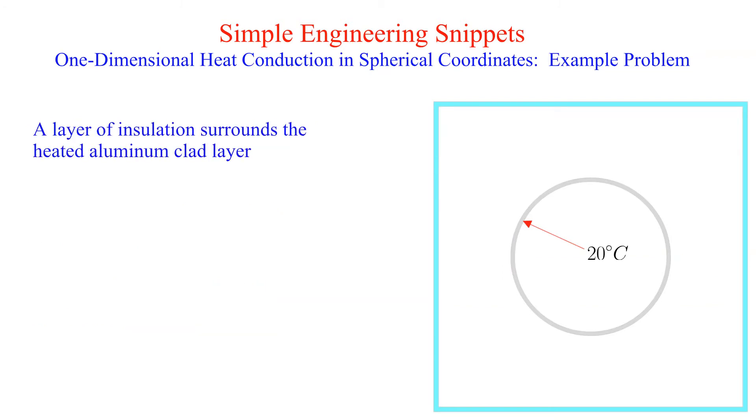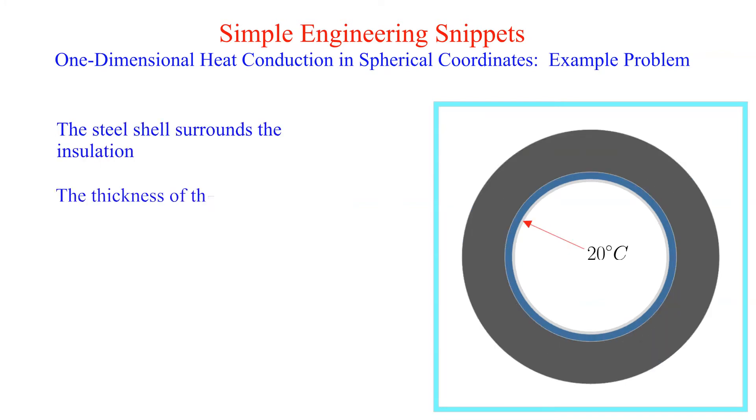The next layer is insulation with a thickness of 1 centimeter. The outer layer is steel with a thickness of 6.5 centimeters.